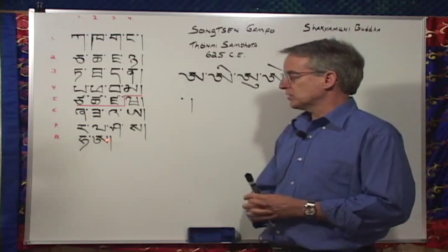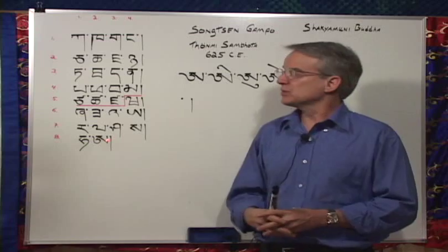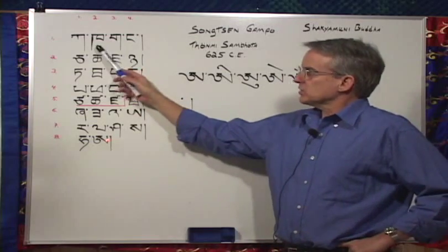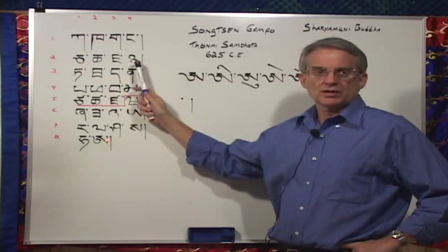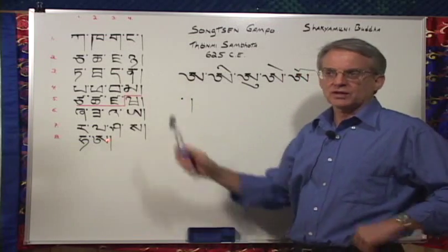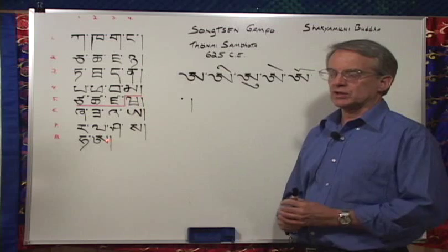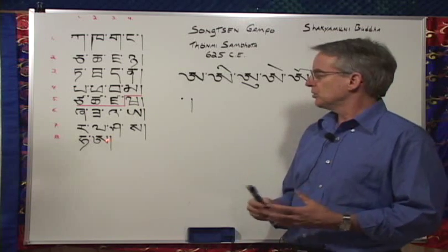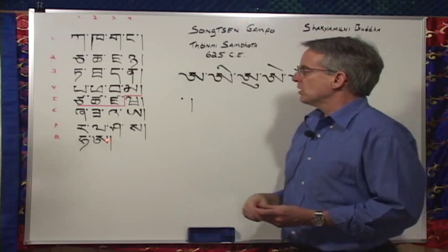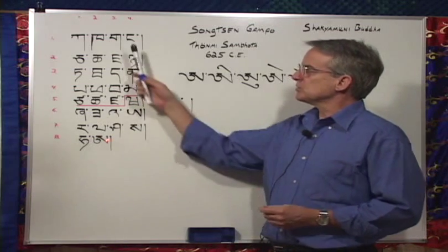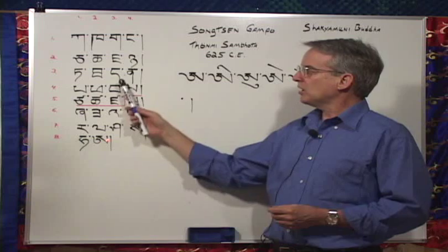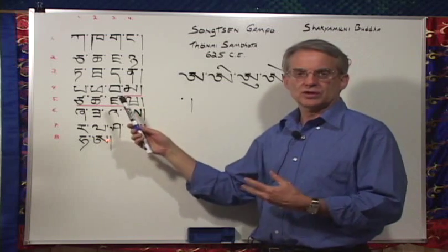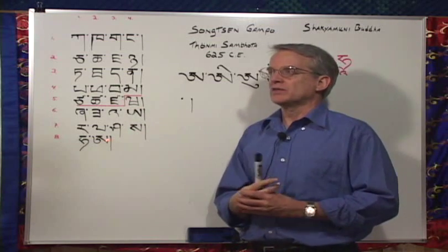It's also present in the vowels. Tibetan doesn't have a separate letter to indicate the vowels like we do in English with a-e-i-o-u. It rather assumes the inherent ah vowel, so that's the vowel unless otherwise indicated.